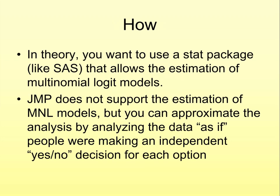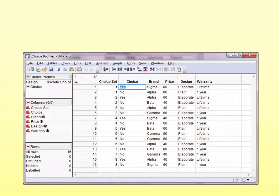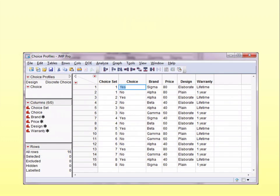So how do we estimate all this? Well, in theory, what you really want is a stat package that supports estimation of the multinomial logit. Unfortunately, JUMP doesn't allow us to do that. But we can get around it by analyzing the data as if people were making a series of independent yes-no decisions for each option with each choice set. And I'll show you how to do that. So here's how.